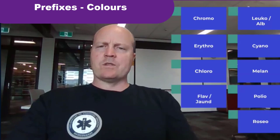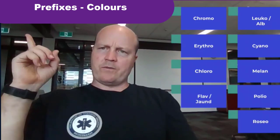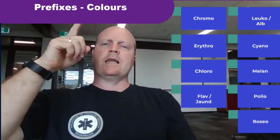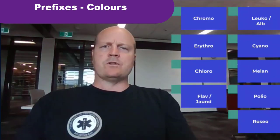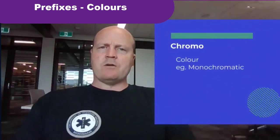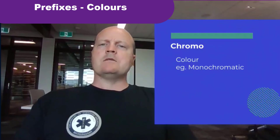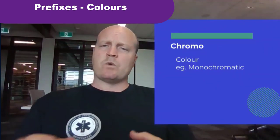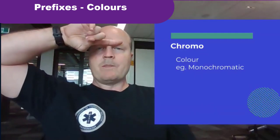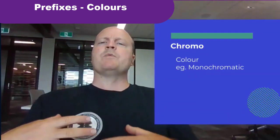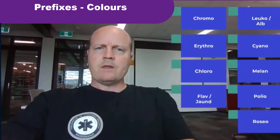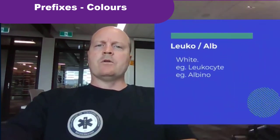Kia ora team, we're back and we're still looking at prefixes — this time we're looking at prefixes relating to color. Let's get started. First up, every time we see 'chromo' it means color. So monochromatic — remember mono is one, just like a monobrow — so monochromatic would be one color, or black and white.